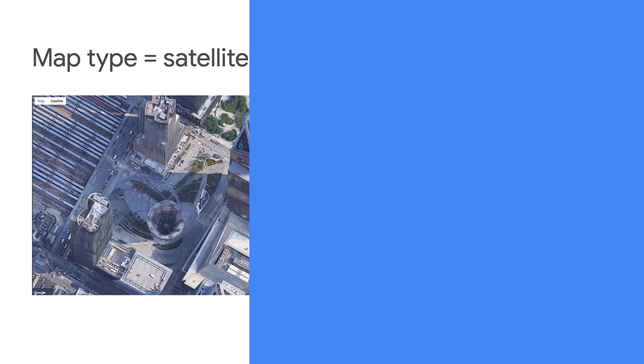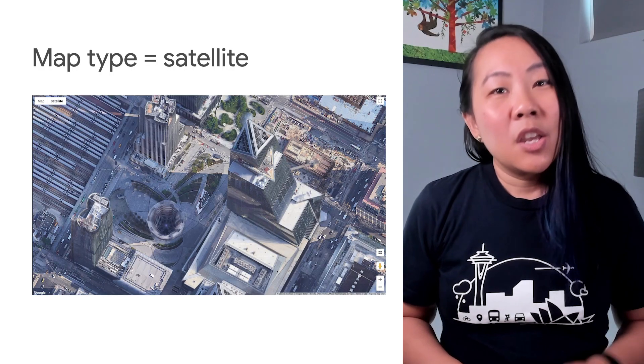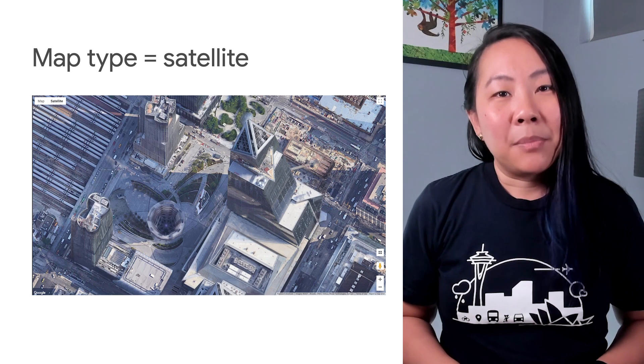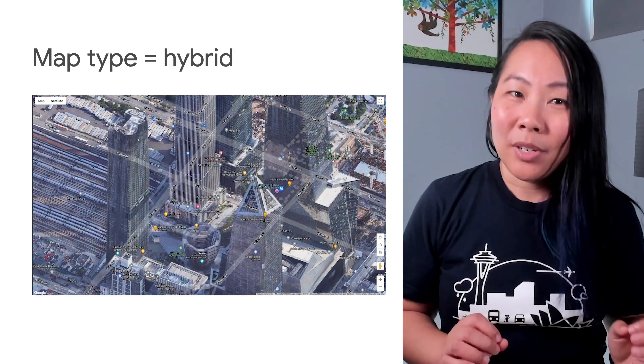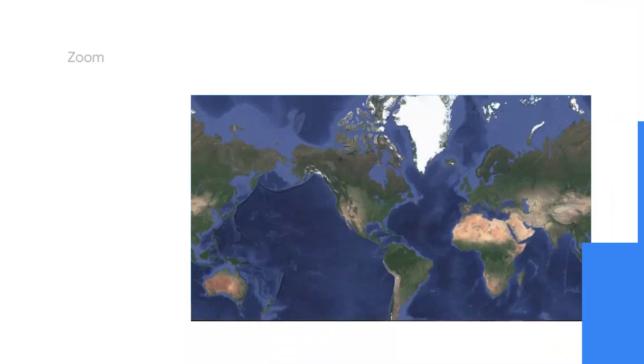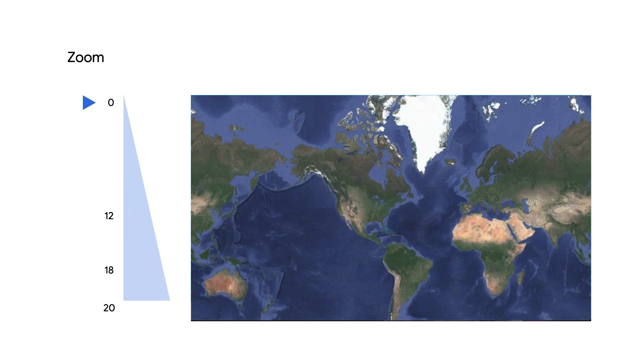You might be wondering which settings give you this 45-degree angle. First of all, this works with dynamic maps for JavaScript. Second, you'll need to set the map type to satellite or hybrid. Let's break it down by zoom level, starting from zoom level 0.